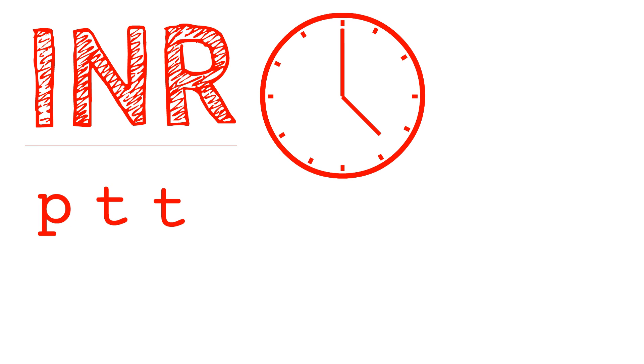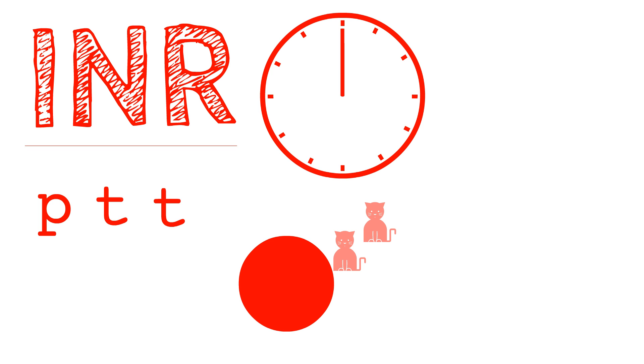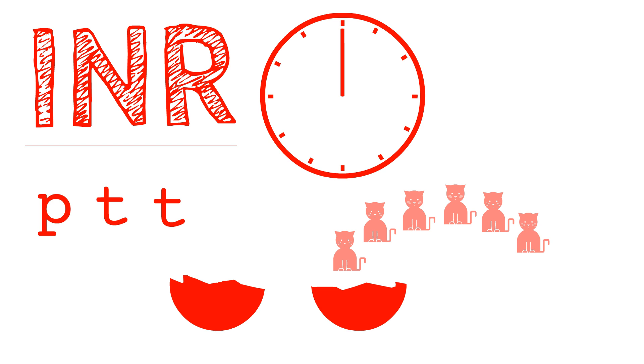The INR is the standardised version of a prothrombin time test. It measures how long it takes for the blood to clot. Clotting factors are made by the liver, so clotting time increases in liver dysfunction.